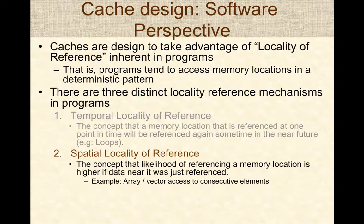Spatial locality of reference refers to the likelihood of referencing memory locations adjacent to each other. For example, when arrays or vectors are processed, programs tend to access consecutive elements. This fits well with blocks of data being moved between caches and RAM, leading to spatial locality of reference.